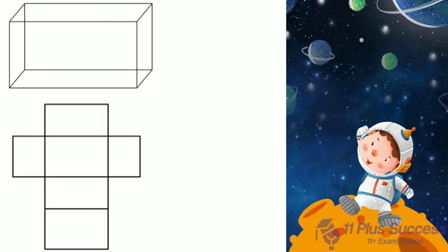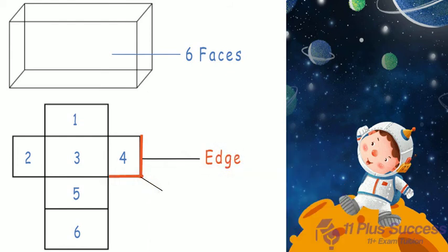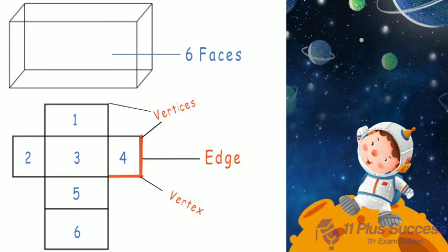Each square on a net represents a face of the solid, so the number of net squares should equal the solid's faces. Each line represents an edge. Each point where edges meet is called a vertex (singular) or vertices (plural).